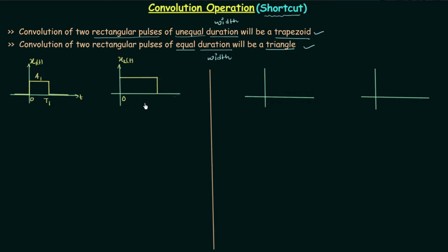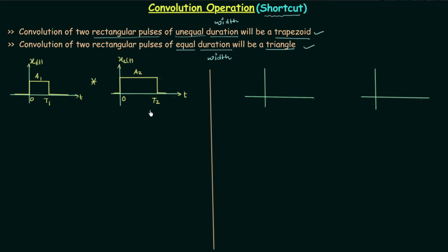We will take our second signal x2(t), which has a duration or width more than the first signal. It is non-zero between 0 to t2, and you can clearly see t2 is greater than t1. It is a rectangular pulse and the amplitude or height of signal x2(t) is equal to a2. So we have everything to perform the shortcut method and obtain the trapezoid.